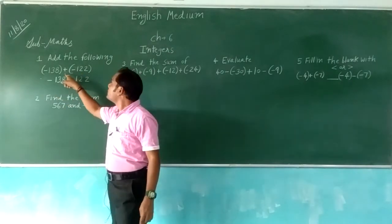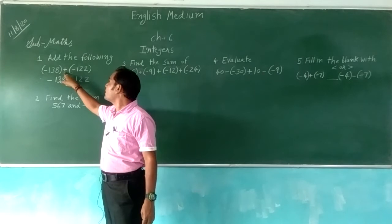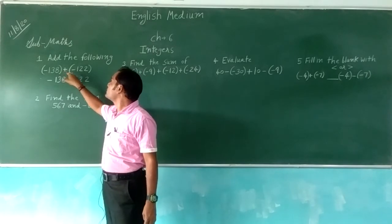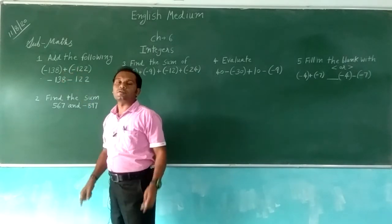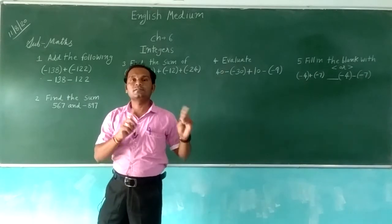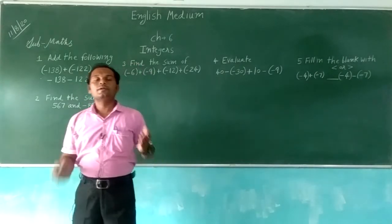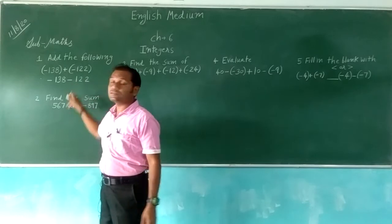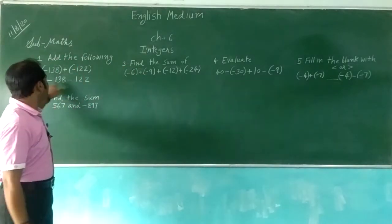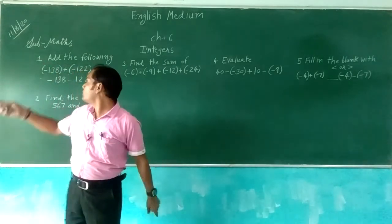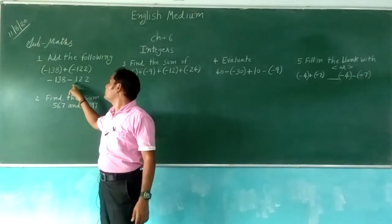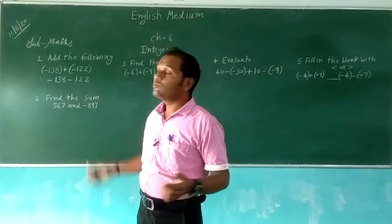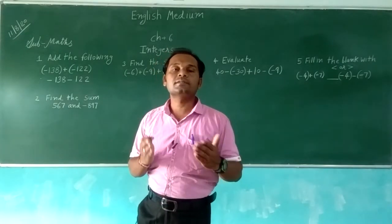Same rule applies. Outside the bracket the sign is plus, and inside the bracket the sign is minus. So plus minus gives minus. We have two numbers: minus 138 and minus 122. Both numbers are minus, so minus minus gives plus — we will add both numbers.